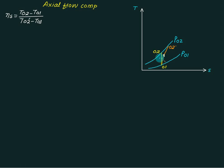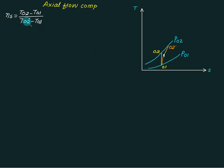Stage efficiency is defined as isentropic enthalpy drop divided by actual enthalpy drop. The isentropic enthalpy drop is given by cp multiplied by (T02 minus T01), and the actual enthalpy drop is cp multiplied by (T02 dash minus T01). Since cp cancels, stage efficiency equals (T02 minus T01) divided by (T02 dash minus T01).